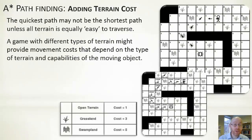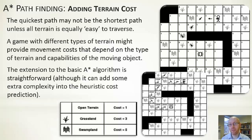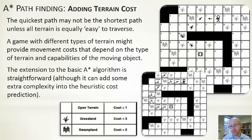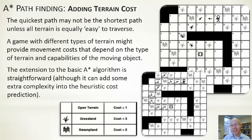We can also add terrain costs, so each cell has a different movement cost — maybe 2 or 3 movement points for some cells. This builds into A* quite easily as part of the given cost, with the heuristic cost assuming some average terrain. You can also use this for cover: assign high movement costs to cells that are lit and visible, putting the character in danger of being seen, so the generated path keeps the character mostly in cover as they navigate the level.